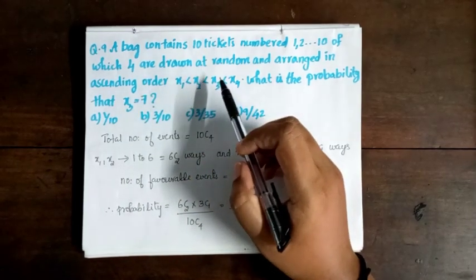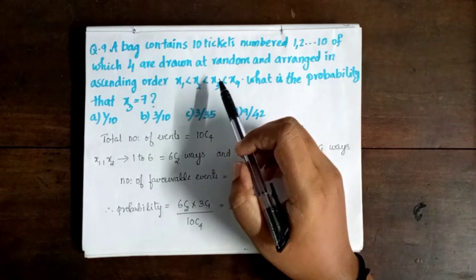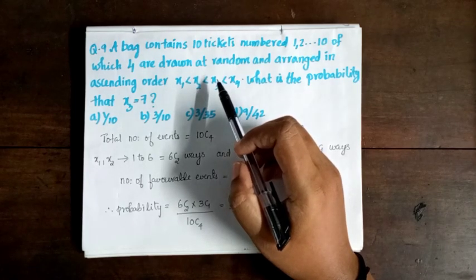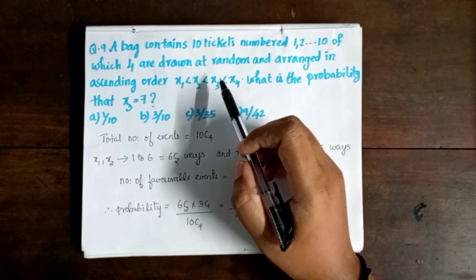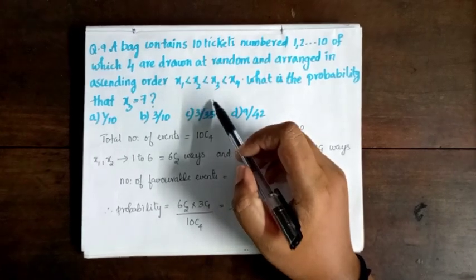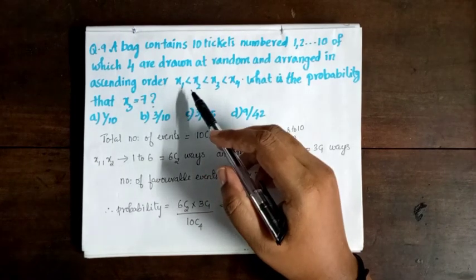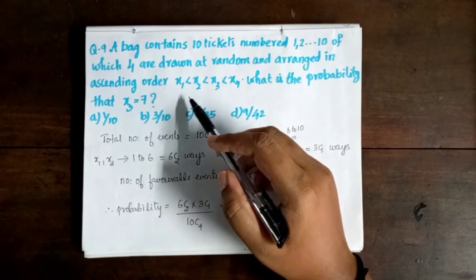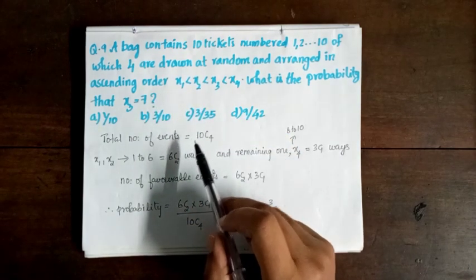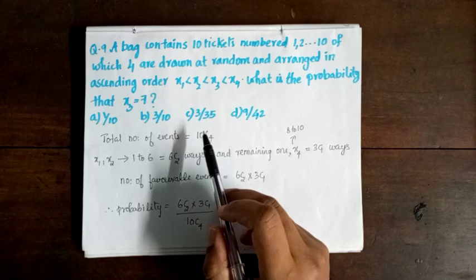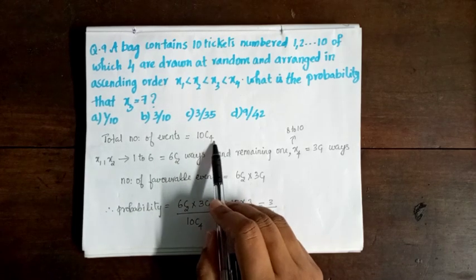We have 10 tickets in the bag, numbered 1 to 10, and 4 tickets are drawn and arranged in ascending order. The total number of events is 10C4.